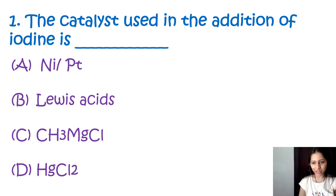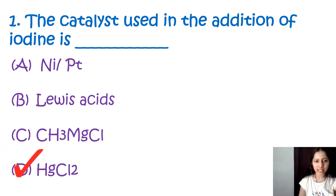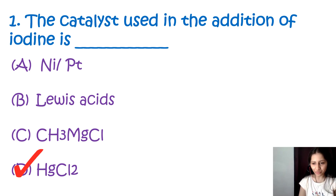Question number 1: The catalyst which is used in the addition of iodine is — nickel or platinum, Lewis acid, methyl magnesium chloride, or mercury chloride. The correct option is D, mercury chloride. Nickel, Lewis acid, and methyl magnesium chloride cannot be used as a catalyst in the addition of iodine.